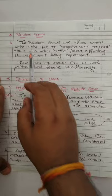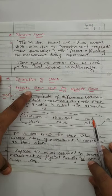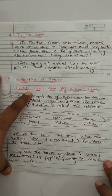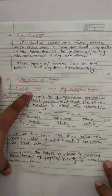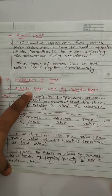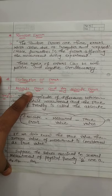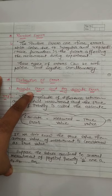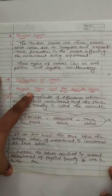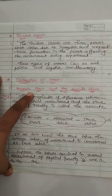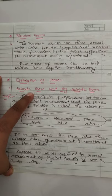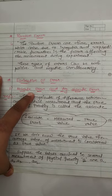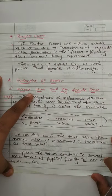Let us discuss our second type of error — random error. Random errors are those errors which arise due to irregular and unpredictable fluctuations in the factors affecting the measurement during experiments. This means that if during an experiment there are unpredictable fluctuations that affect the experiment, then the result is a random error. These types of errors can be both positive and negative simultaneously. Such errors can be estimated by taking many observations and then taking their mean or average values.